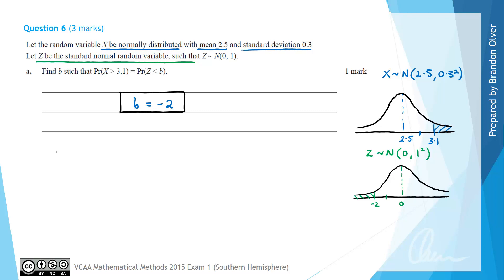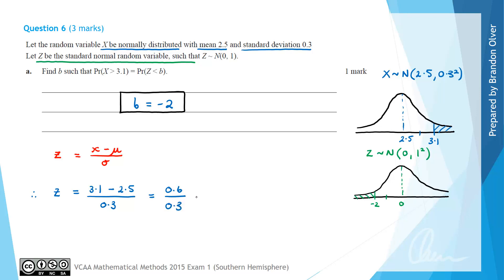Alternatively, there's a formula: the standardized Z value equals the X value minus the mean divided by the standard deviation. For this question, that gives (3.1 − 2.5) / 0.3 = 0.6 / 0.3 = 2. The key step is then using the symmetry of the bell-shaped distribution to recognize that B must equal negative 2, based on the way the question was asked.